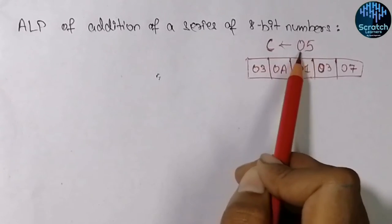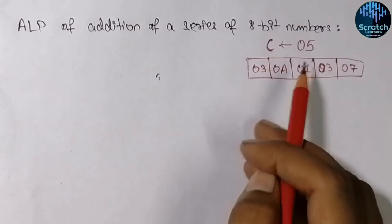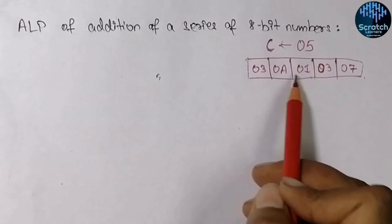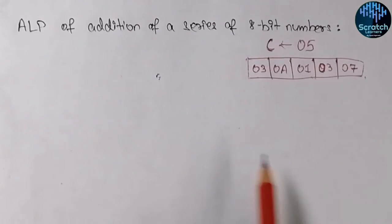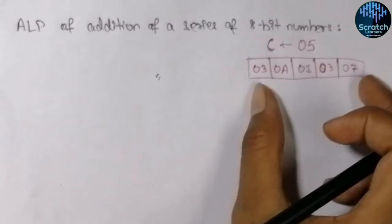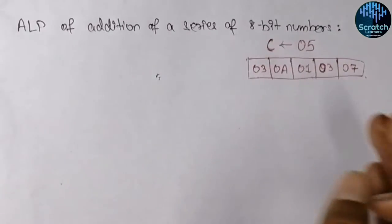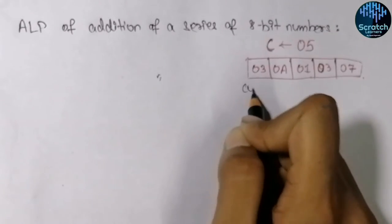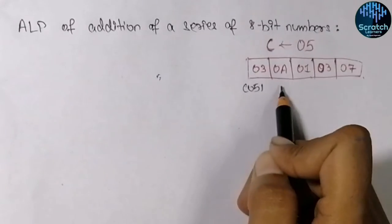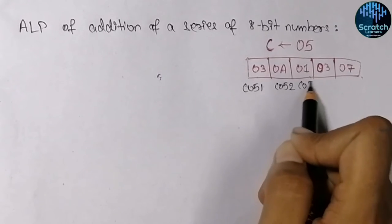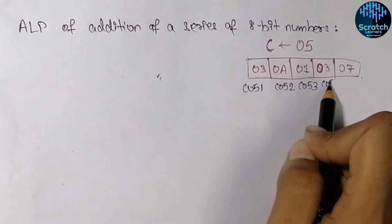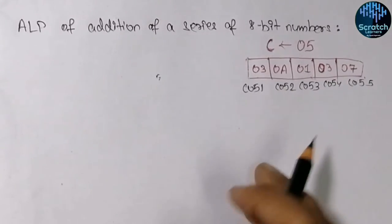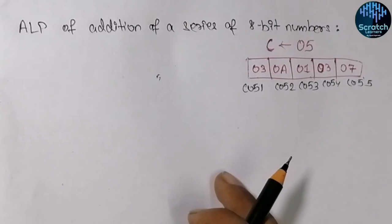Let's take an example where the total number of elements in the array is 5. The five elements are 03, 0A, 01, 03, and 07. These numbers are stored in continuous memory locations starting from C051, then C052, C053, C054, and C055. These are the addresses of the data. Now we need to add them.